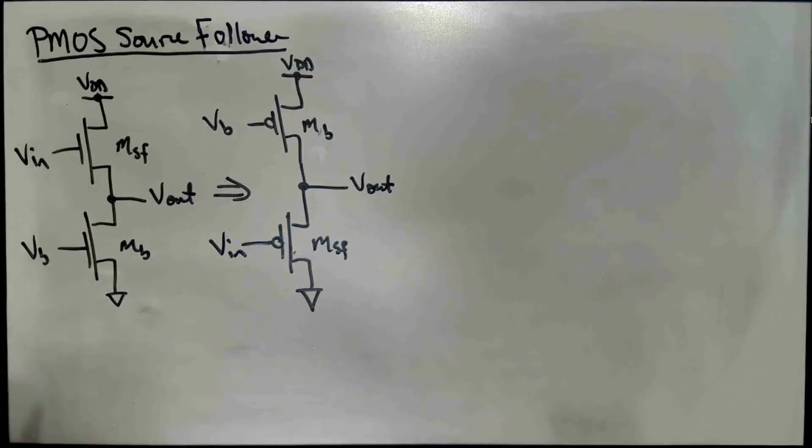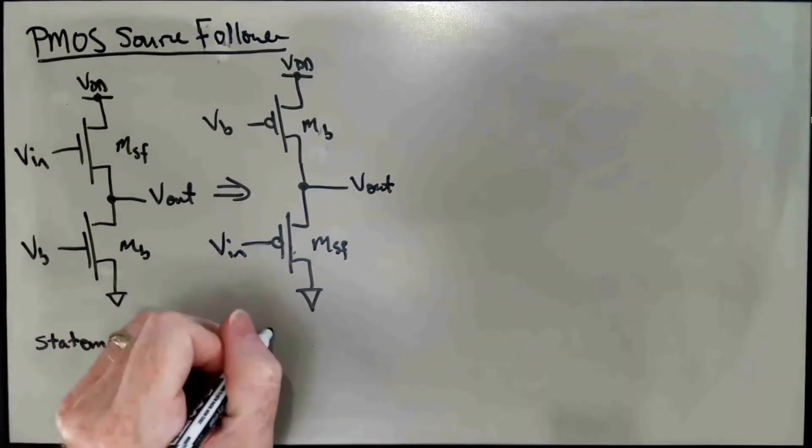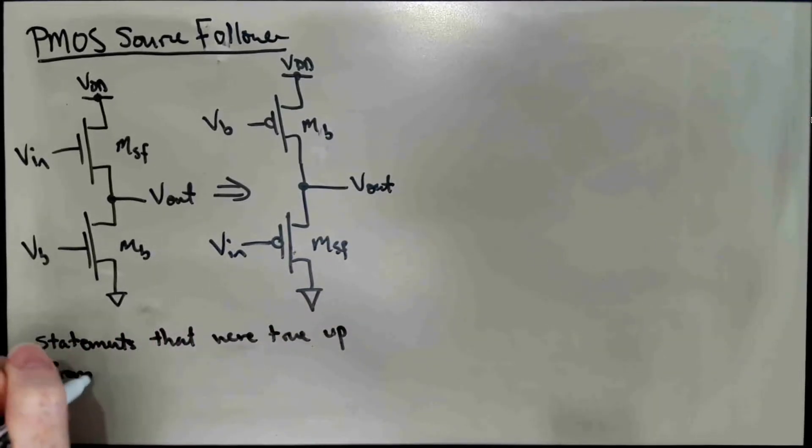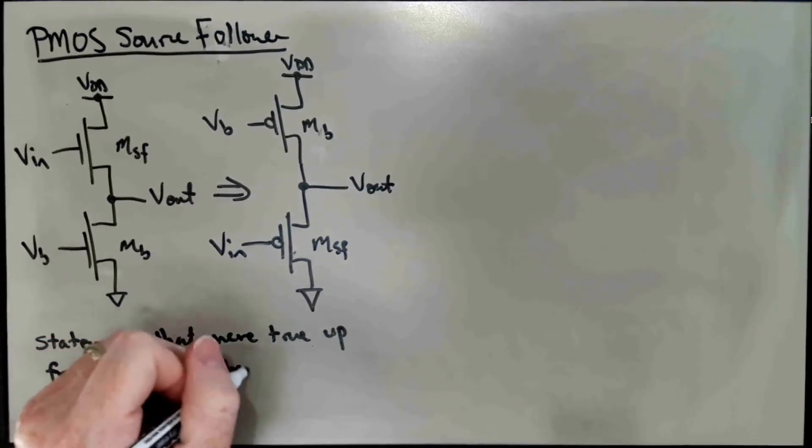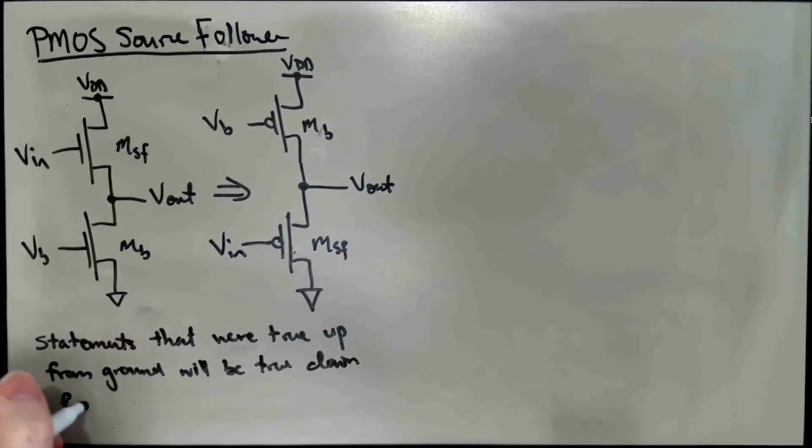Now, to map results, we use the following basic principle: statements that were true up from ground will be true down from VDD.